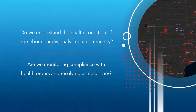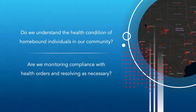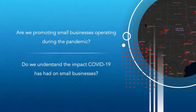The next thing we looked at is how can we help understand the health condition of homebound individuals in your community — someone who may be elderly or unable to get out because of the pandemic, making it difficult to get basic necessities like medicine, food, and overall wellness. Ultimately, are we monitoring compliance with health orders and resolving them as necessary? And the last area we wanted to look at is the impact on small businesses — how can local governments promote small businesses operating during the pandemic, help them maintain operations, understand how COVID-19 has impacted their business, and align them with available resources.